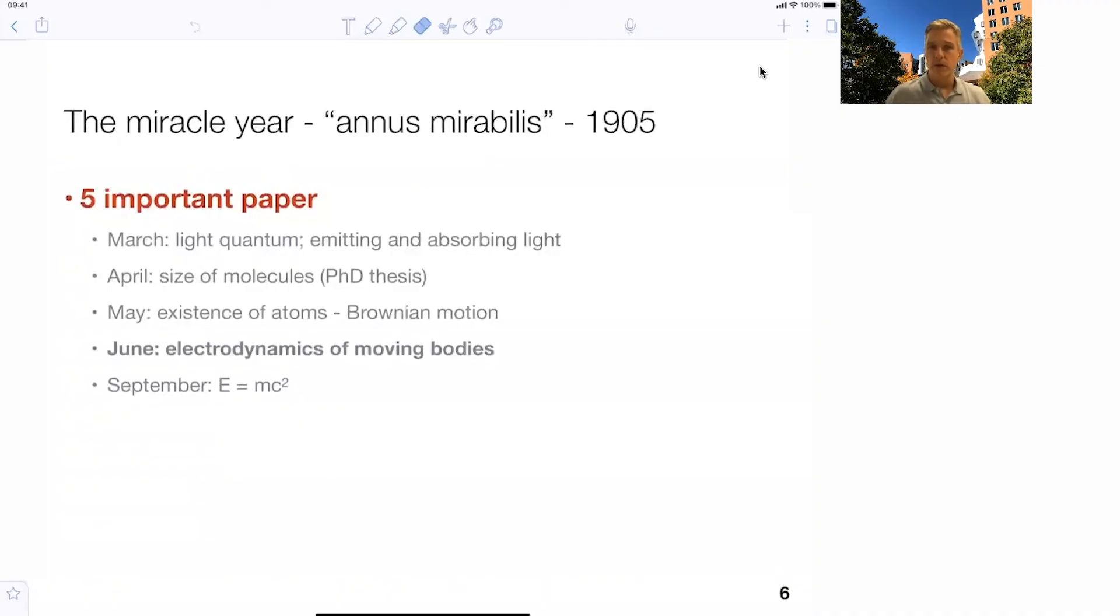The first one was on light quantum. He was able to describe the emission and absorption of light. In April then, which was part of his PhD thesis, he was able to characterize the size of molecules. And in May, he was able to show the existence of atoms. He was basically demonstrating this by following Brownian random motion of atoms.